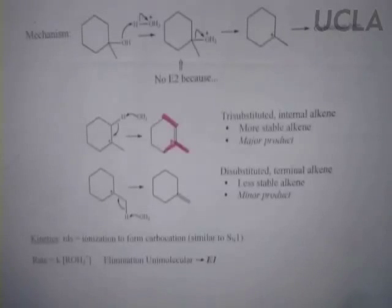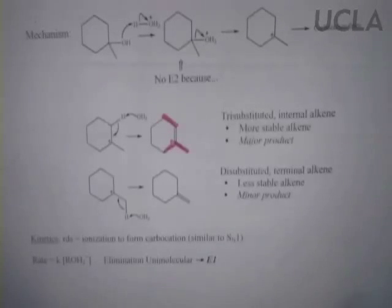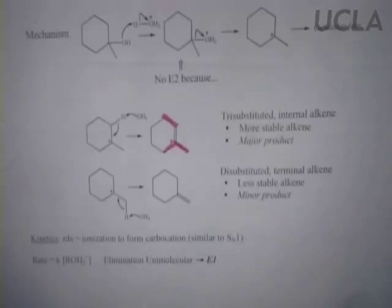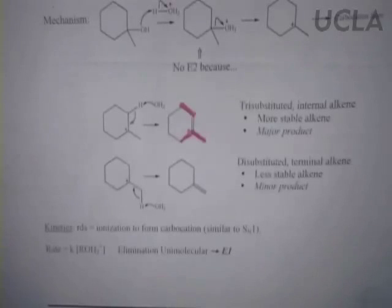A student questioned the hydrogen count: four and three make seven, yeah. The professor humorously corrected the earlier count, joking that being non-human means not making mistakes — then acknowledged the student was absolutely right and blamed insufficient coffee.